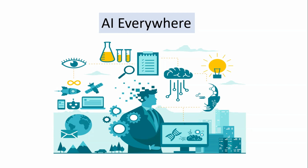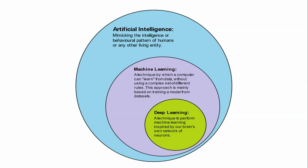Artificial intelligence is the broader umbrella under which machine learning and deep learning come. As seen in the diagram, deep learning is a subset of machine learning, and machine learning is a subset of artificial intelligence. AI covers domains such as machine learning, deep learning, neural networks, natural language processing, knowledge bases, expert systems, computer vision, and image processing.